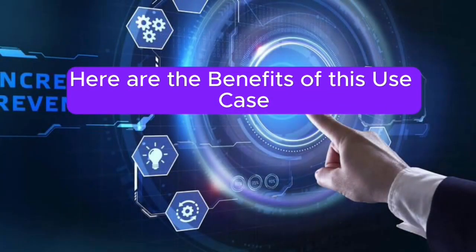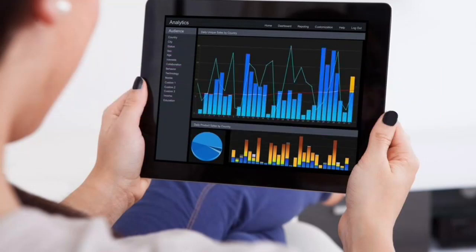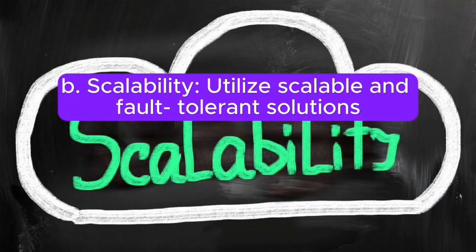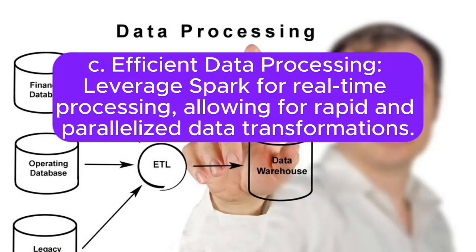Here are the benefits of this use case. A. Real-time analytics: enable organizations to perform real-time analysis and gain immediate insights from incoming data streams. B. Scalability: utilize scalable and fault-tolerant solutions like Apache Kafka and cloud-based data warehousing, enabling the system to handle growing data volumes. C. Efficient data processing: leverage Spark for real-time processing, allowing for rapid and parallelized data transformations.